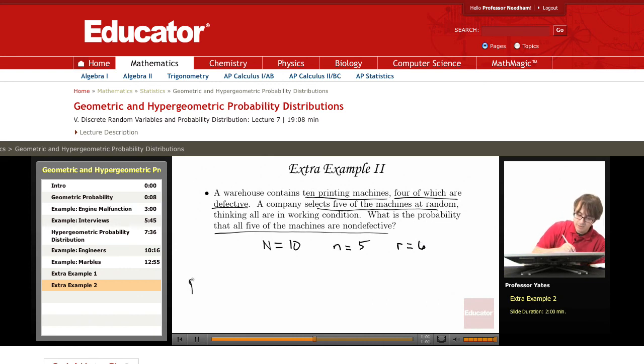So we want to find the probability that all five that I select are non-defective.